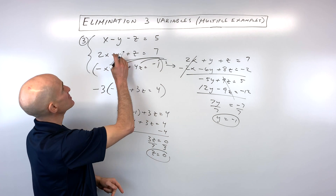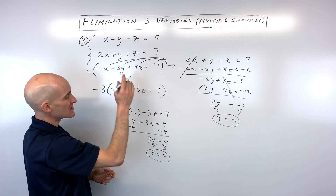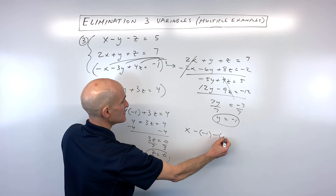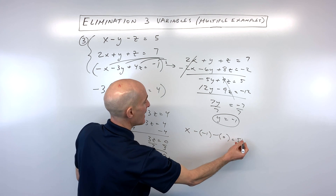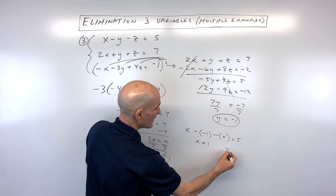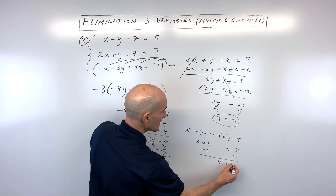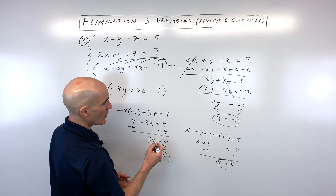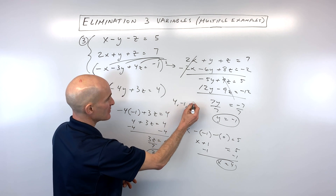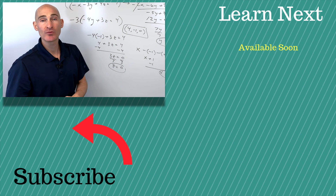We have y and z, so we just need to solve for x. Putting the values into the top original equation: x minus negative 1 minus 0 equals 5. Negative times negative is positive, so that's x plus 1 equals 5. Subtract 1 from both sides and x equals 4. We write our answer as a triple in alphabetical order: 4, negative 1, 0. If you want to check your work, put the values back into the original equations to make sure they're all true.